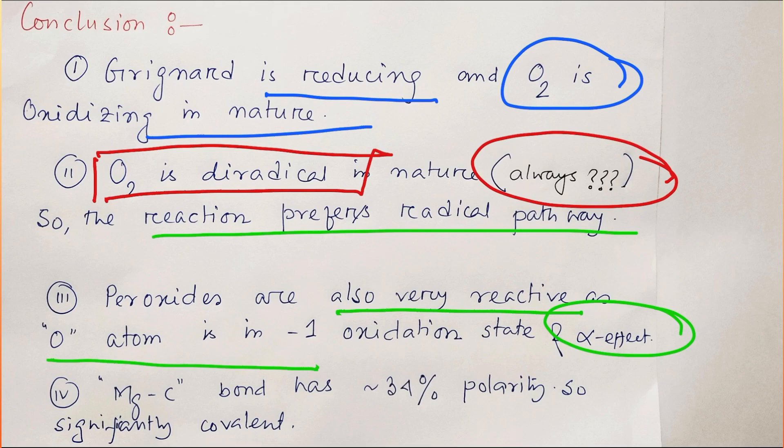And in this case, another important information: the magnesium-carbon bond has significant polarity—that is, it is near about 34 percent. Now you will say that, sir, 34 percent is less, but remember, for organic chemistry or carbon-based chemistry, this is significantly higher. Okay, so this is the end of the discussion. Thanks for watching. See you in my next video.